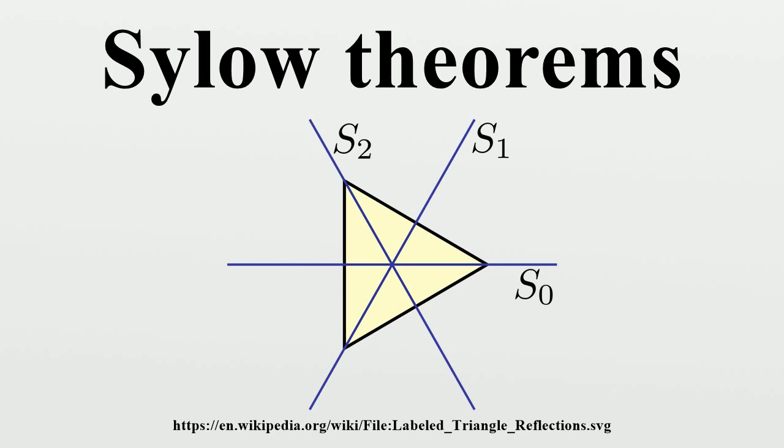G then has 10 distinct cyclic subgroups of order 3, each of which has two elements of order 3. This means G has at least 20 distinct elements of order 3. As well, n_5 equals 6, since n_5 must divide 6, and n_5 must equal 1 mod 5. So G also has 24 distinct elements of order 5, but the order of G is only 30, so a simple group of order 30 cannot exist.